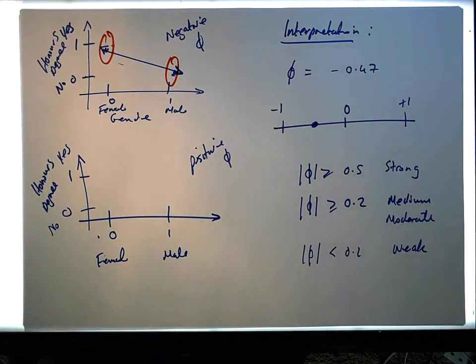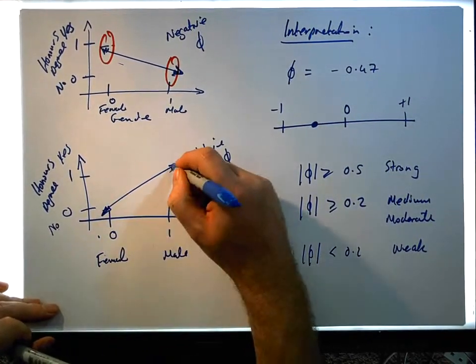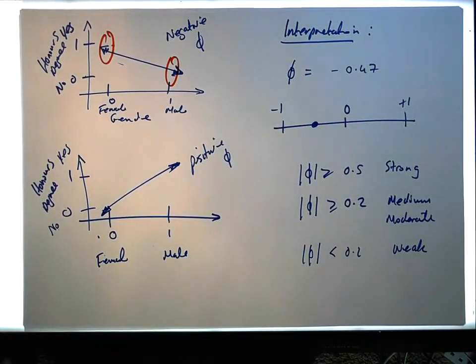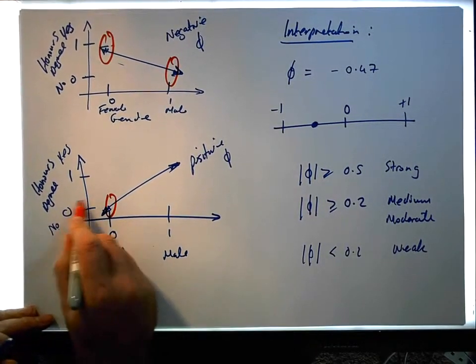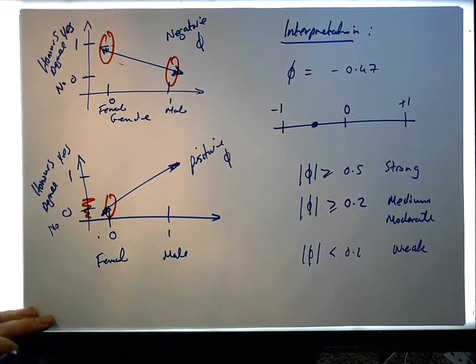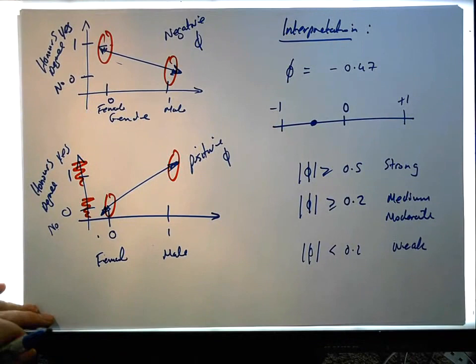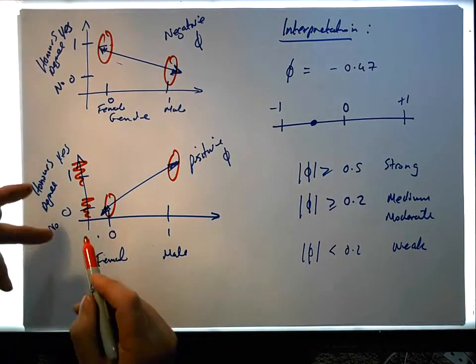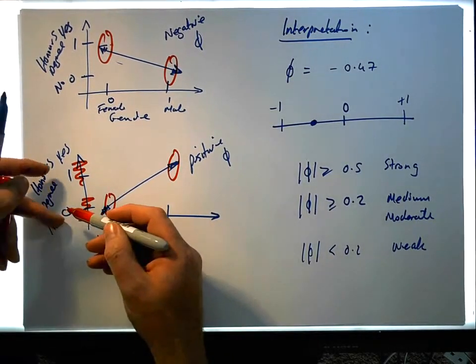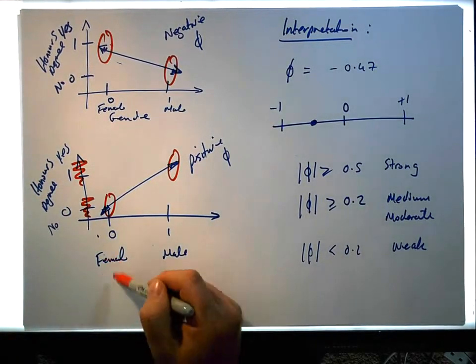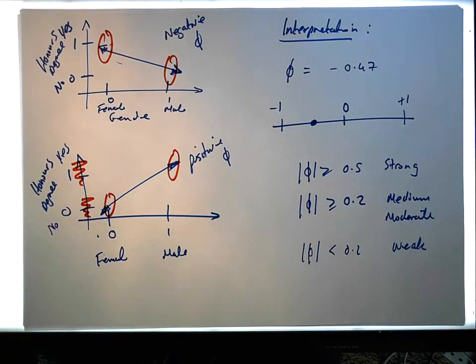I'm just using a line here, but we're not really plotting lines. What it means is females are typically associated with low values on that scale, whereas males are typically associated with larger values. Remember these are dichotomous, so large values means ones, small values mean zeros. Which means females are typically associated with not holding an honours degree, whereas males are typically associated with holding an honours degree.